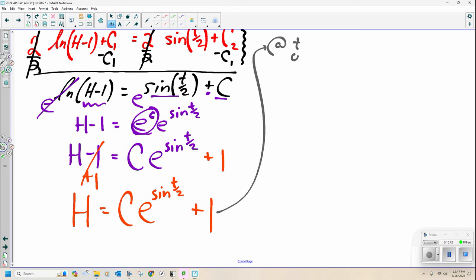At t is 0, H is 4. Okay? So for my H, I got 4. That was my H. Equals some constant, E, to the sine of 0 over 2. Okay? That's my time. Plus 1.